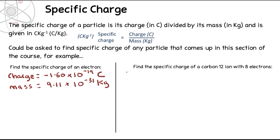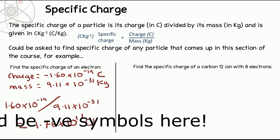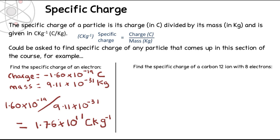We've got the charge and the mass, and the equation is charge divided by mass. So if we do 1.60 times 10 to the minus 19 divided by 9.11 times 10 to the minus 31, we get a specific charge of 1.76 times 10 to the power of 11 coulombs per kilogram. As a side note, the electron has the largest specific charge of any particle we currently know of, because it has a relatively high charge and such a tiny mass.